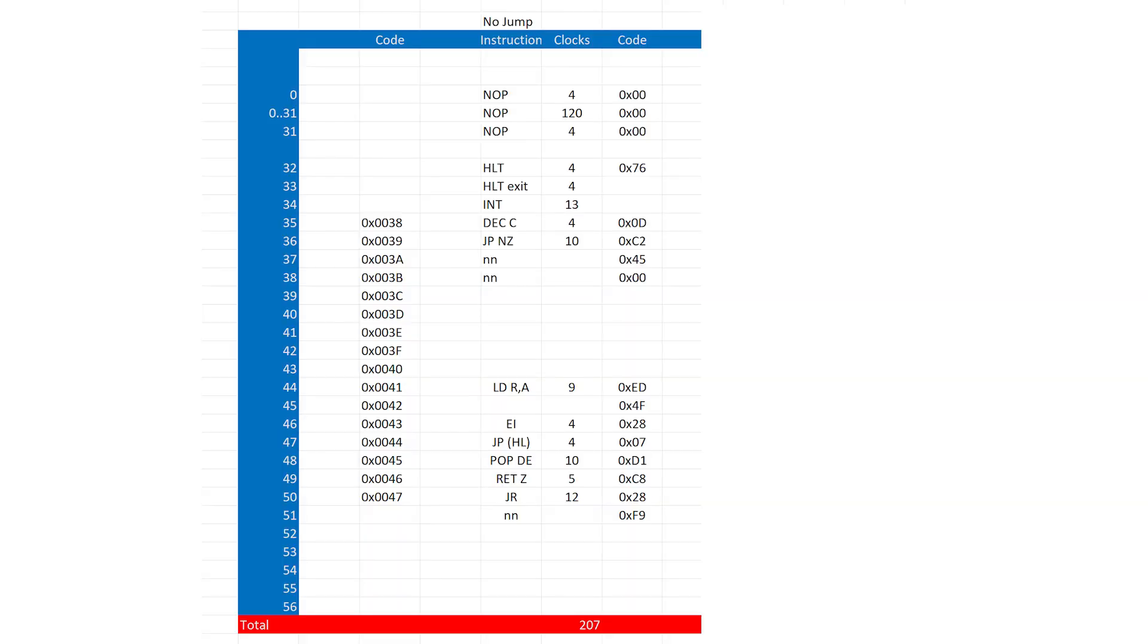I've analyzed it here with clock cycles included. We have 32 no-ops which come from the display file of the HALT instruction, and these take 128 clock cycles. Then we have to account for the HALT instruction itself, HALT exit, and interrupt, which take up 21 clock cycles.